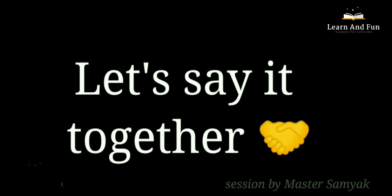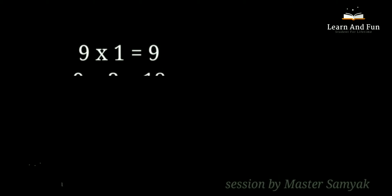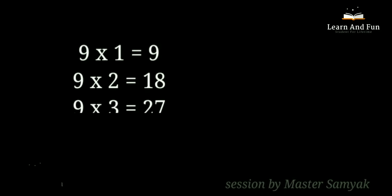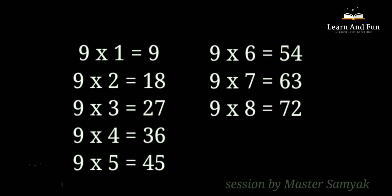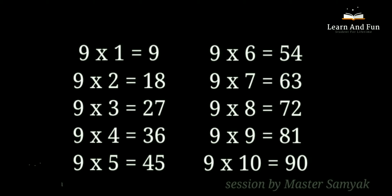Let's say it together. 9 ones are 9. 9 twos are 18. 9 threes are 27. 9 fours are 36. 9 fives are 45. 9 sixes are 54. 9 sevens are 63. 9 eights are 72. 9 nines are 81. 9 tens are 90.